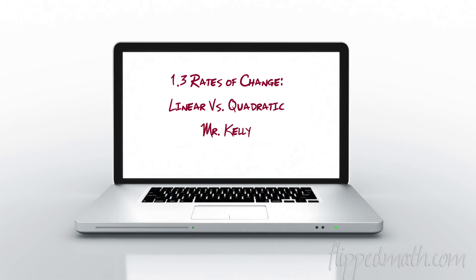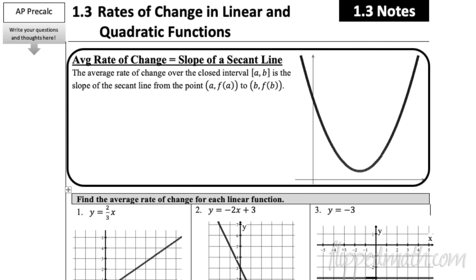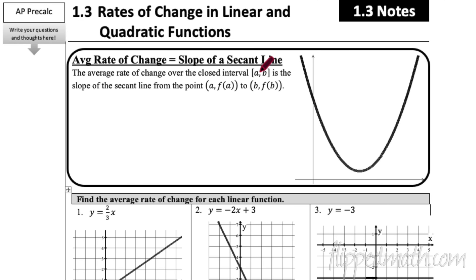All right, hey, welcome back. This is Mr. Kelly. We're on 1.3: Rates of Change in Linear Functions and Quadratic Functions. Let's review a little bit with average rate of change. We know that's the slope of the secant line. Secant line might be a new word, so let's pretend we're looking at a closed interval from a to b.